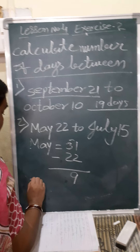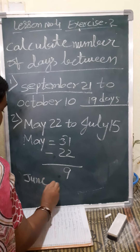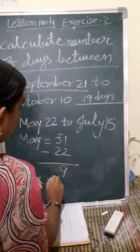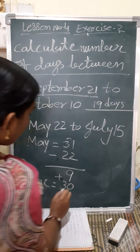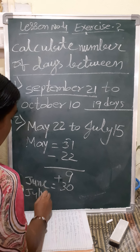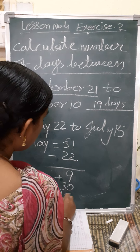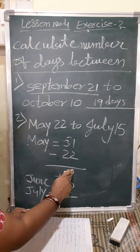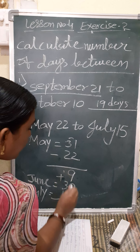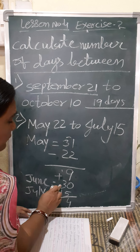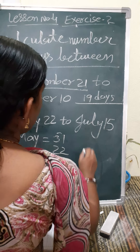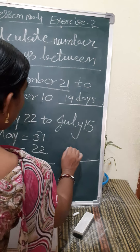After May, June month is there — complete June month is 30 days. Then July: it is told July month, 15 days are given. Now see children, all three we are going to add: 9 plus 0 is 9, 9 plus 5 is 14, carry 1; 1 plus 3 is 4, 4 plus 1 is 5. How many days in between? There are 54 days.